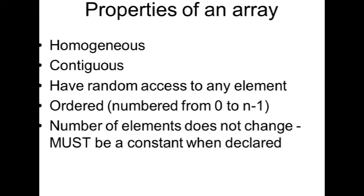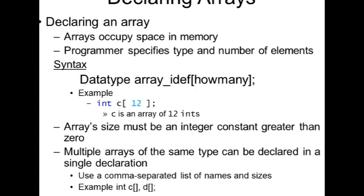Declaring an array: arrays occupy space in memory. The programmer specifies the type and the number of elements. The syntax is data type, array identifier, square brackets with how many size you want. For example, int c[12] - c is an array of 12 ints.